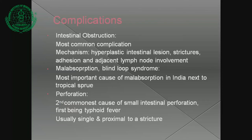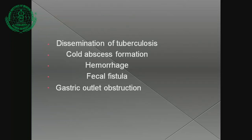Complications include: intestinal obstruction — the most common complication — due to hyperplastic intestinal lesion, strictures, adhesions, or adjacent lymph nodes. Malabsorption and blind loop syndrome are the most important causes of malabsorption in India after tropical sprue. Perforation is the second most common cause of small intestinal perforation (first being typhoid fever), usually single or proximal to the stricture. Other complications: disseminated tuberculosis, cold abscess formation, hemorrhage, fistula formation, and gastric outlet obstruction.